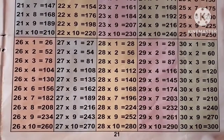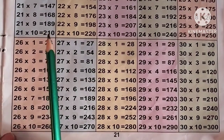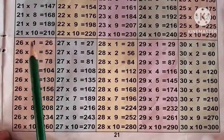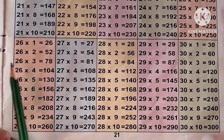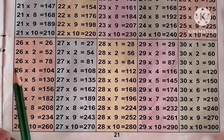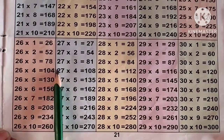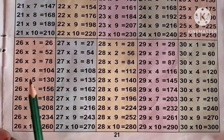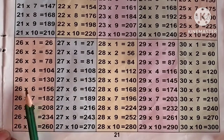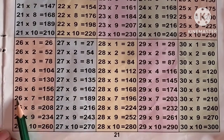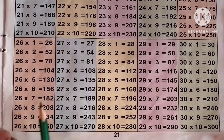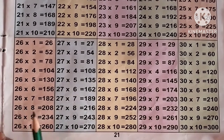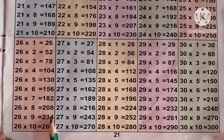Now the table of 26: 26 ones are 26, 26 2s are 52, 26 3s are 78, 26 4s are 104, 26 5s are 130, 26 6s are 156, 26 7s are 182, 26 8s are 208, 26 9s are 234, 26 10s are 260.